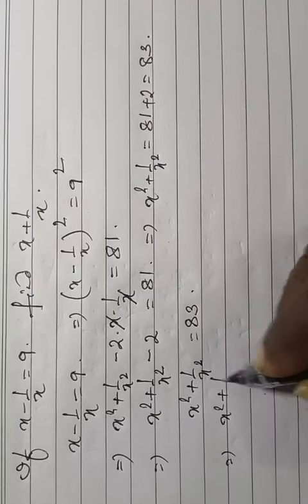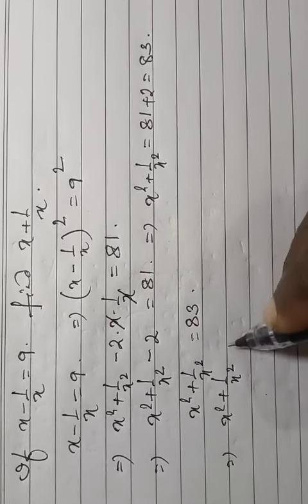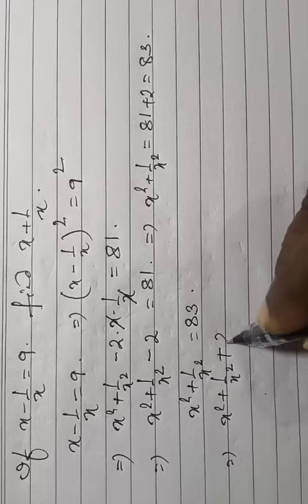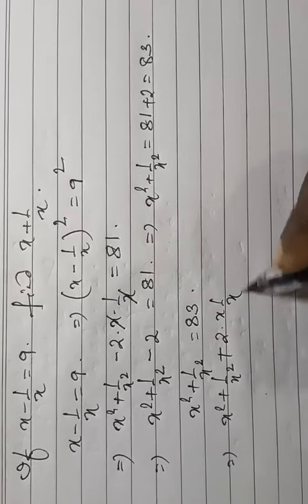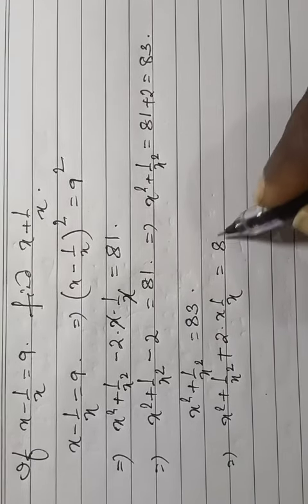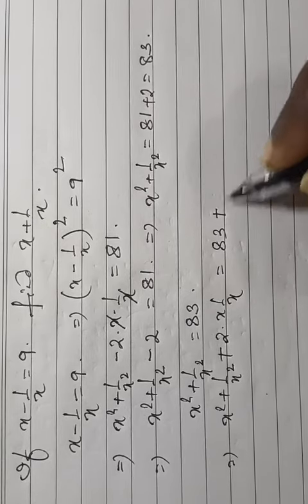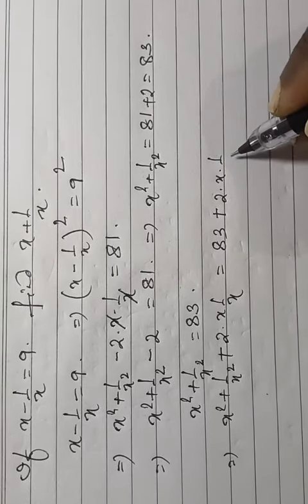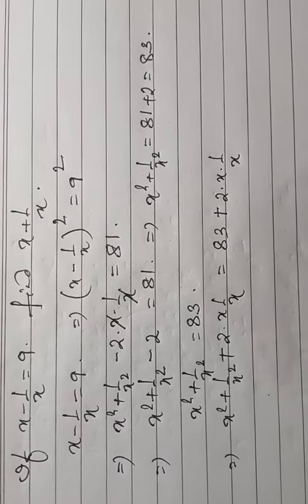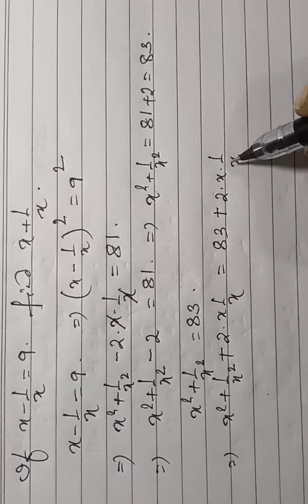x square plus 1 by x square plus 2x times 1 by x is equal to 83 plus 2x times 1 by x, meaning we're adding to both sides.